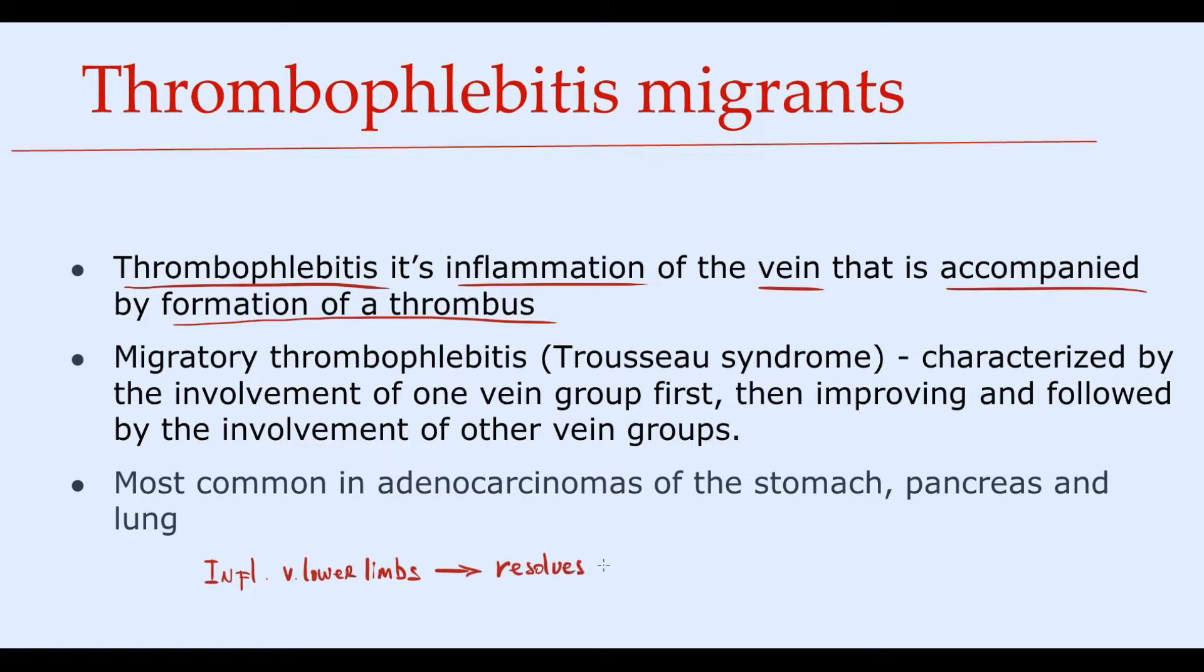But then inflammation reoccurs and now it affects another group of veins, let's say the veins of the abdominal wall. This condition is called migratory thrombophlebitis, also called Trousseau syndrome. This condition most commonly occurs in patients with adenocarcinomas of the stomach, pancreas and lung.